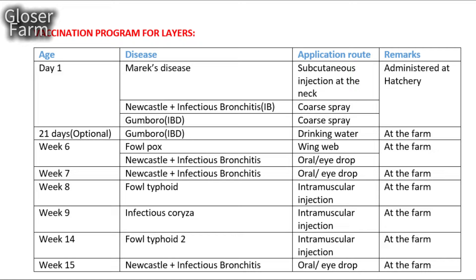In week nine, administer infectious coryza vaccine via intramuscular injection in the thigh or breast muscles. In the 14th week, give a booster dose of fowl typhoid vaccine in the same way as the first one. At week 15, give Newcastle and infectious bronchitis vaccines, and thereafter repeat Newcastle plus infectious bronchitis vaccination every six to eight weeks.